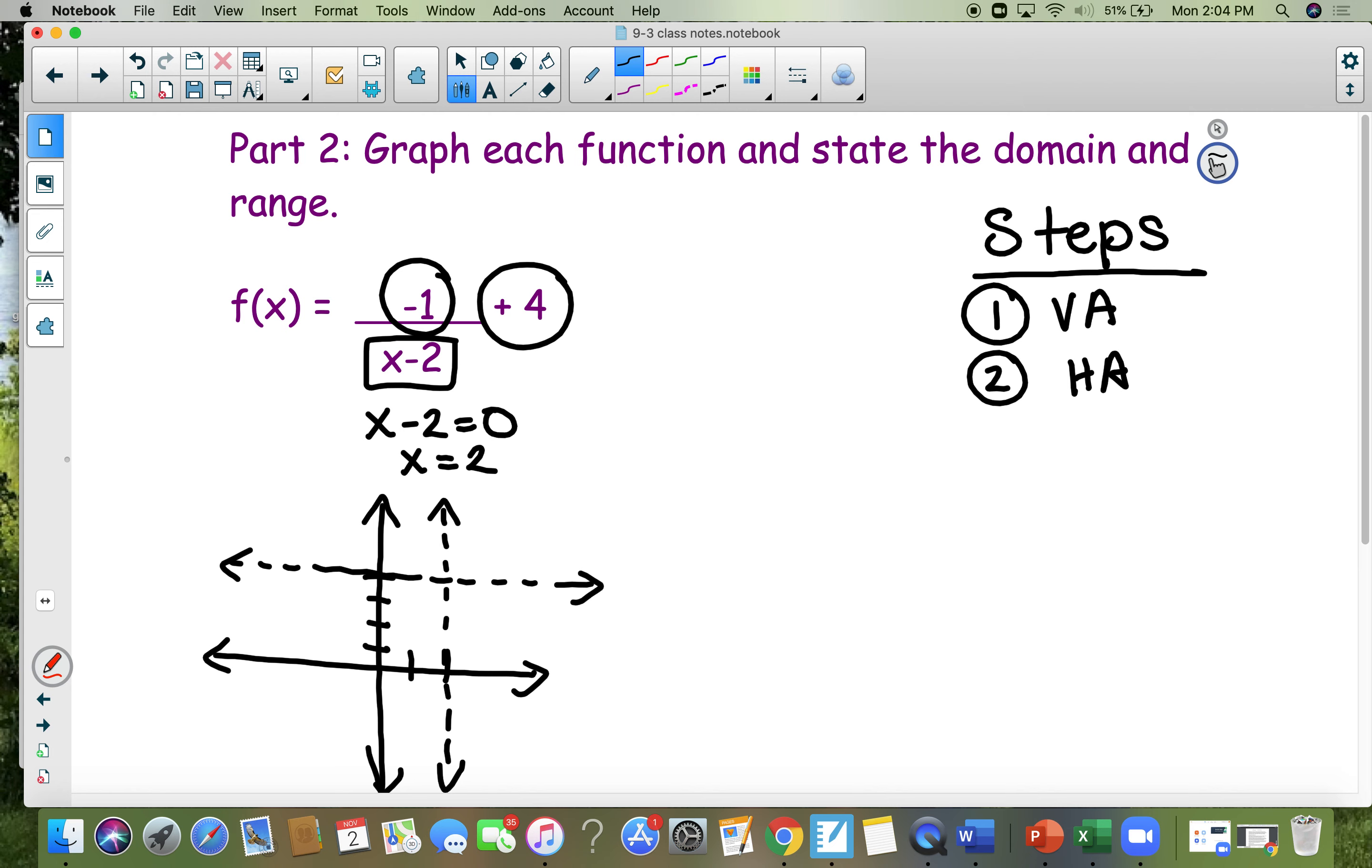So the number up on top, if it's positive, you are in the first and the third quadrant. If it's negative, you are in the second and the fourth quadrants. So you're going to be in this quadrant and this quadrant because it's a negative 1.